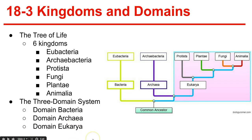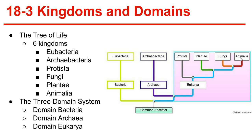Next, the domain Eukarya consists of all organisms that have a nucleus, organized into four remaining kingdoms: Protista, Plantae, Fungi, and Animalia. Protista is composed of eukaryotic organisms that cannot be classified as animals, plants, or fungi. Fungi are heterotrophs that mostly feed on dead or decaying organic matter. Plantae are multicellular organisms that are photosynthetic autotrophs; they are non-motile and their cell walls contain cellulose. Animalia are multicellular and heterotrophic, and they do not have cell walls.